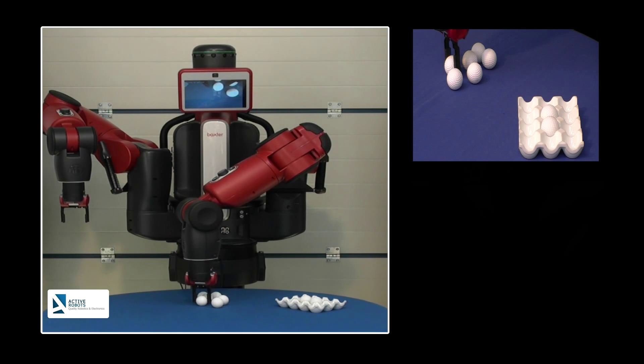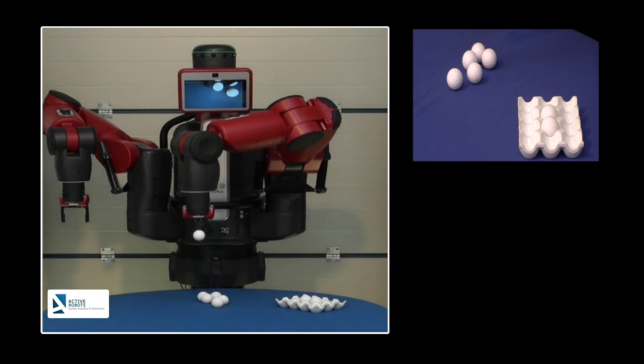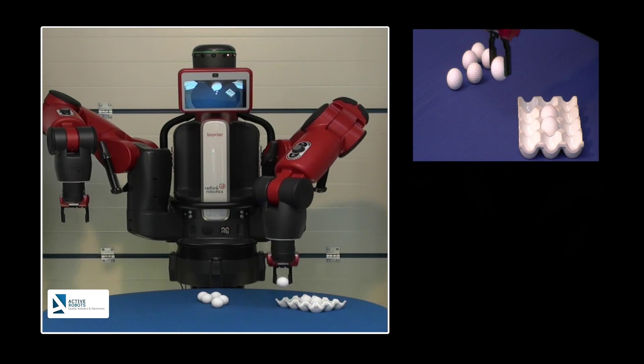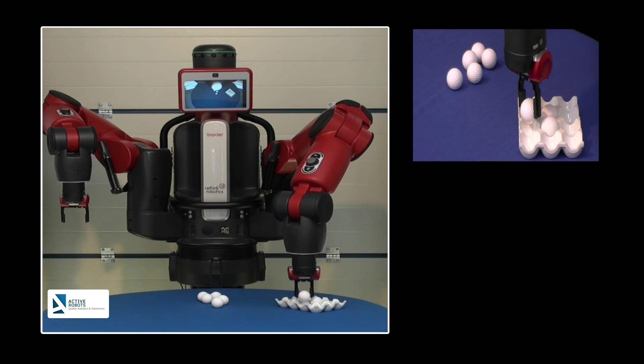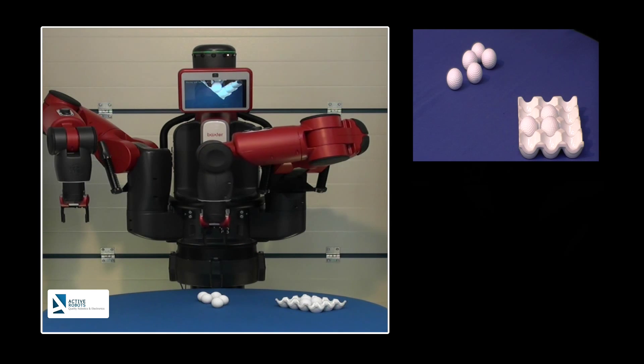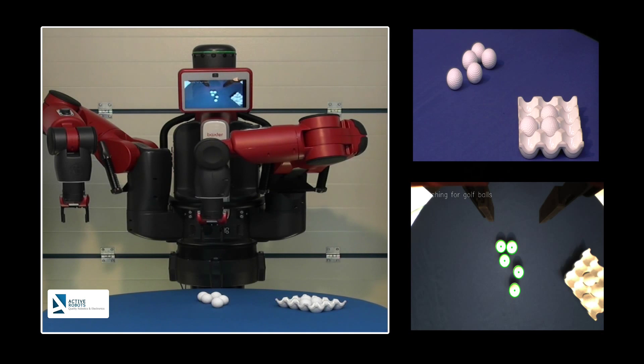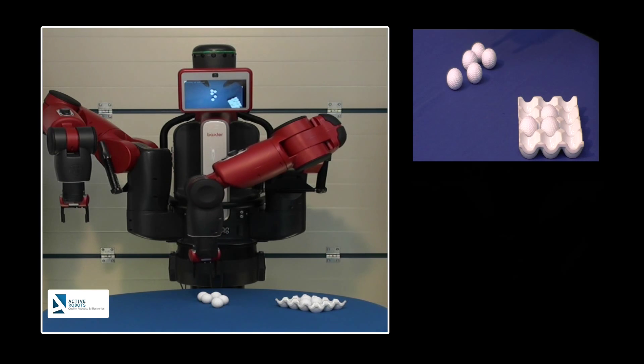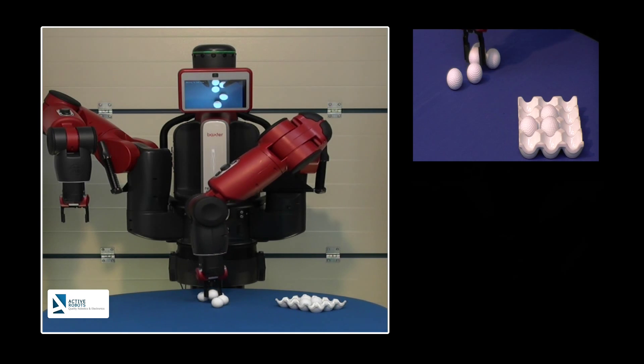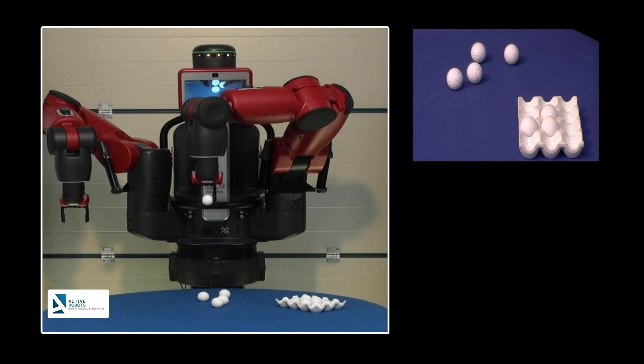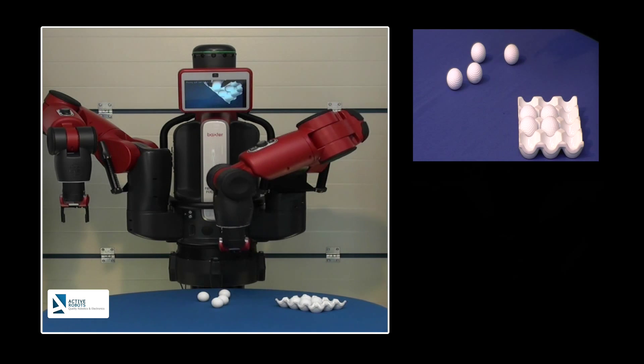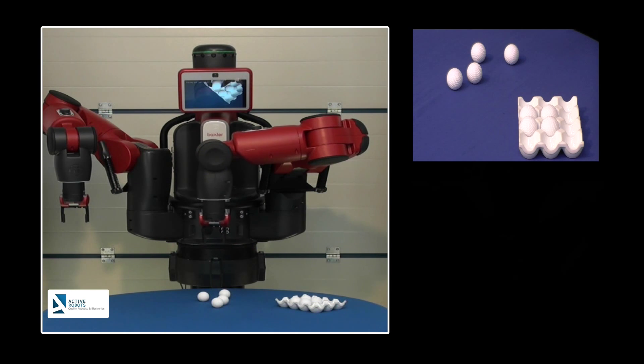You can see on the images below on the left where the Hough circles have been superimposed over the camera image, the circle around each ball, the dot showing the center. Notice one of the balls was moved.